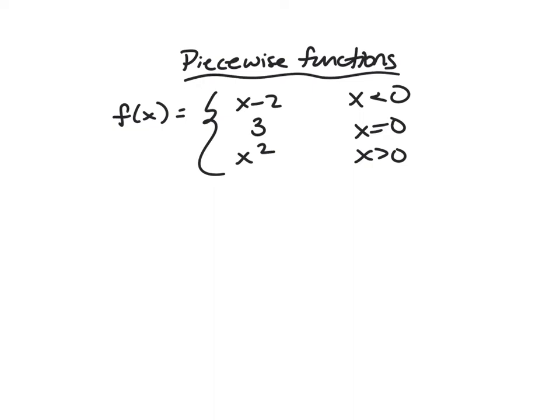So thus far, we've really only looked at things graphically in terms of the left and right-hand limits. Here, we're going to look at it more algebraically. What if you're given a piecewise function defined formula-wise and not given the graph?